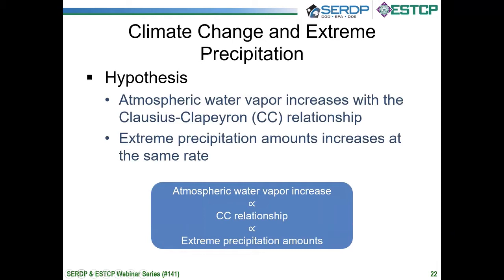Since there is quite a bit of uncertainty about weather system changes, we can form a first-order hypothesis for future changes in extreme precipitation. That is that atmospheric water vapor will increase in response to warming according to this approximate 7% per degree Celsius relationship, which is known as the Clausius-Clapeyron relationship. The second part of the hypothesis is that extreme precipitation will actually increase at the same rate — essentially 7% per degree Celsius.